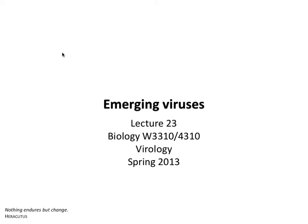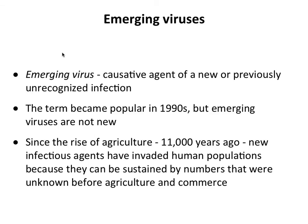Good afternoon everybody. Today we're going to talk about emerging viruses — what everyone is interested in. An emerging virus is the agent of a brand new infection, or something that has been around and we didn't recognize, or even something that's re-emerged. For example, dengue was gone from much of the southern hemisphere by the 80s because of mosquito control, and then we stopped using DDT and it came back.